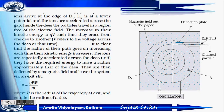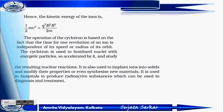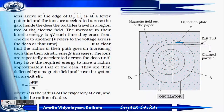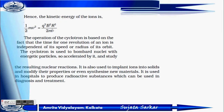The path keeps increasing each time as kinetic energy increases. Ions are rapidly accelerated across the Dees until they acquire the required energy and radius. The velocity of the deflected particle is V = QBR/M, where R is the radius of the trajectory (radius of the Dee). The kinetic energy is KE = ½mv² = Q²B²R²/2M. The operation of the cyclotron is based on the fact that the time for one revolution of an ion is independent of its speed or the radius of its orbit.